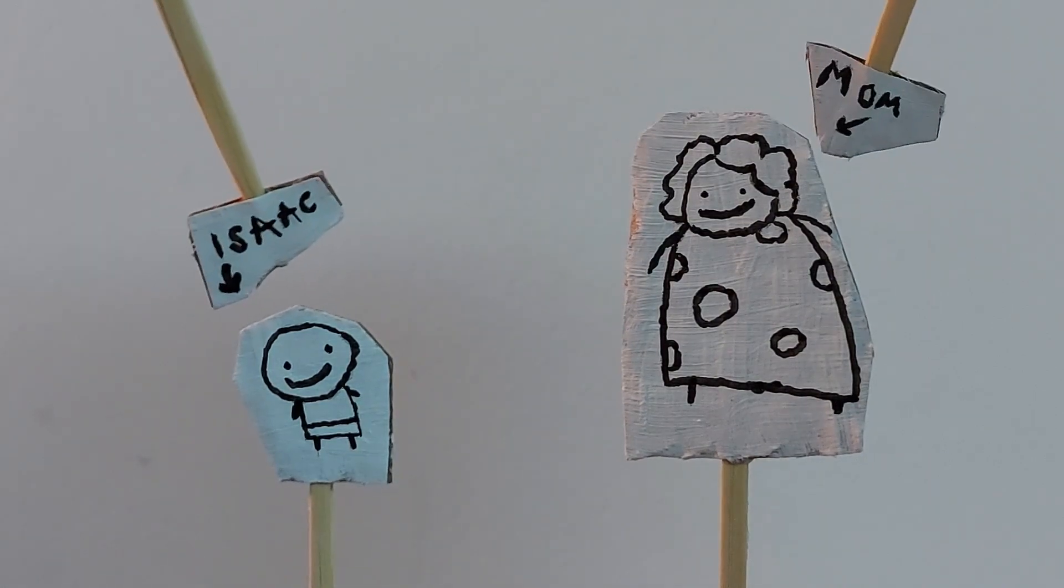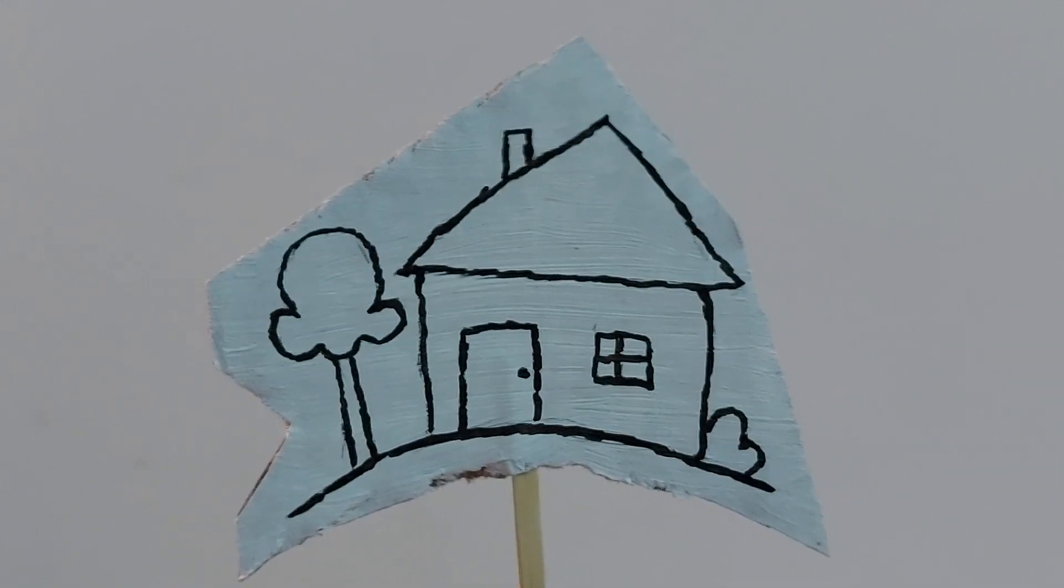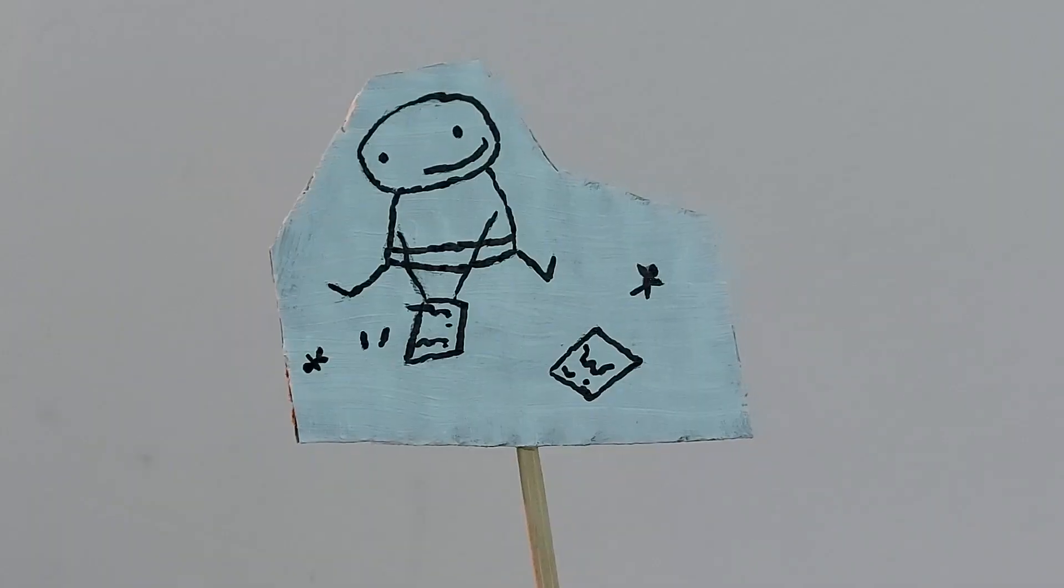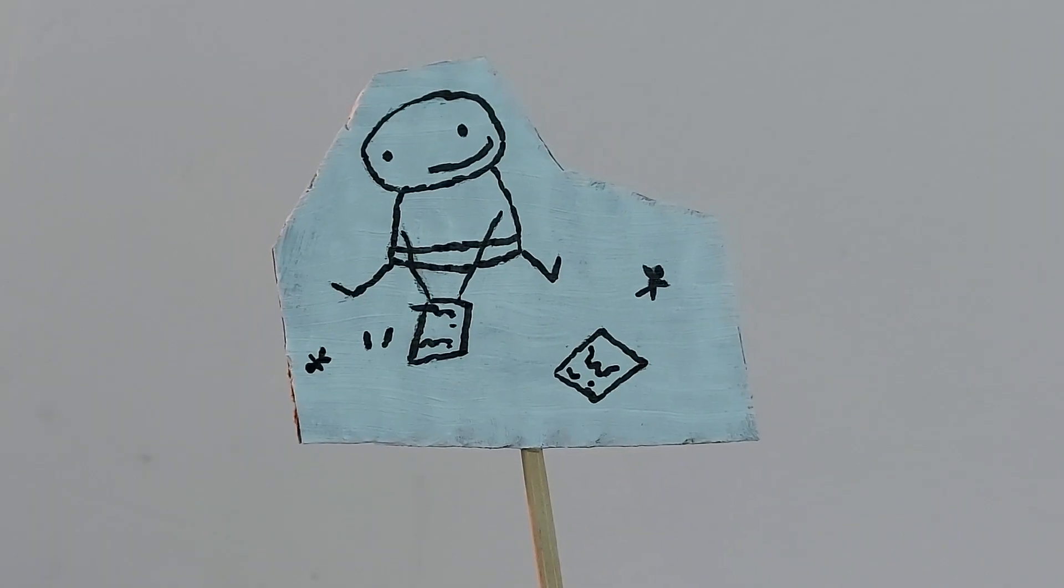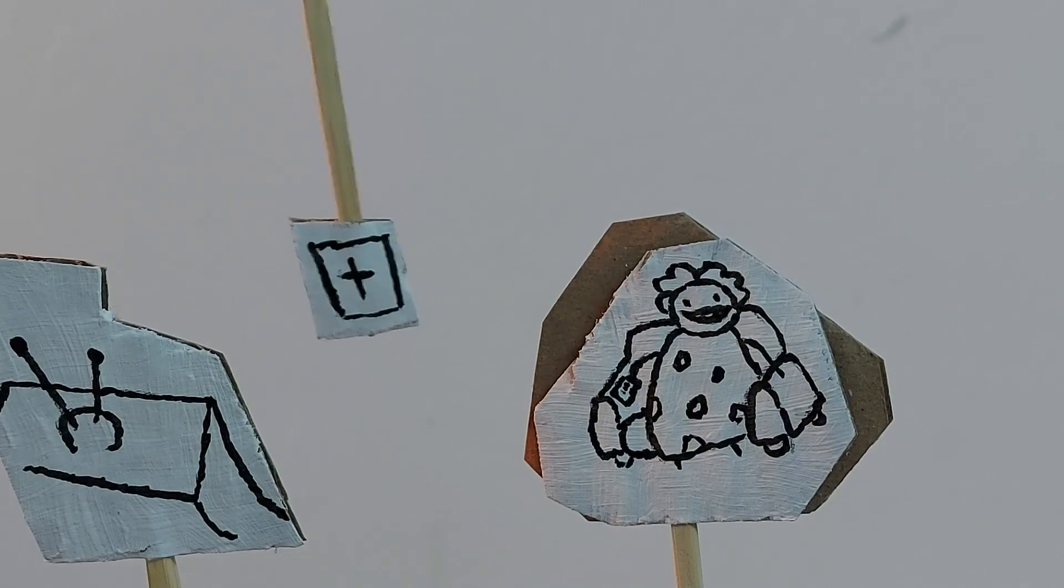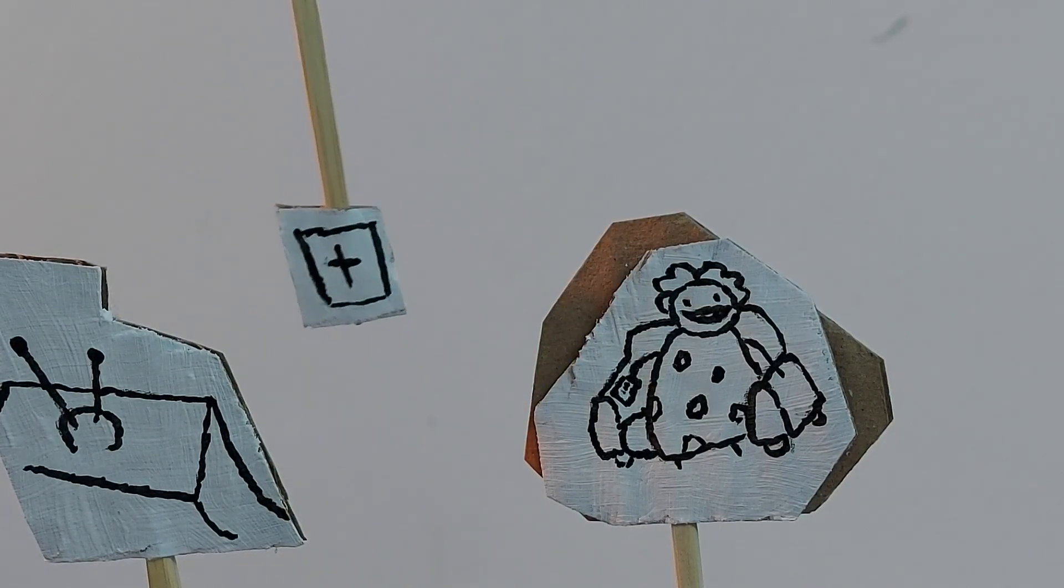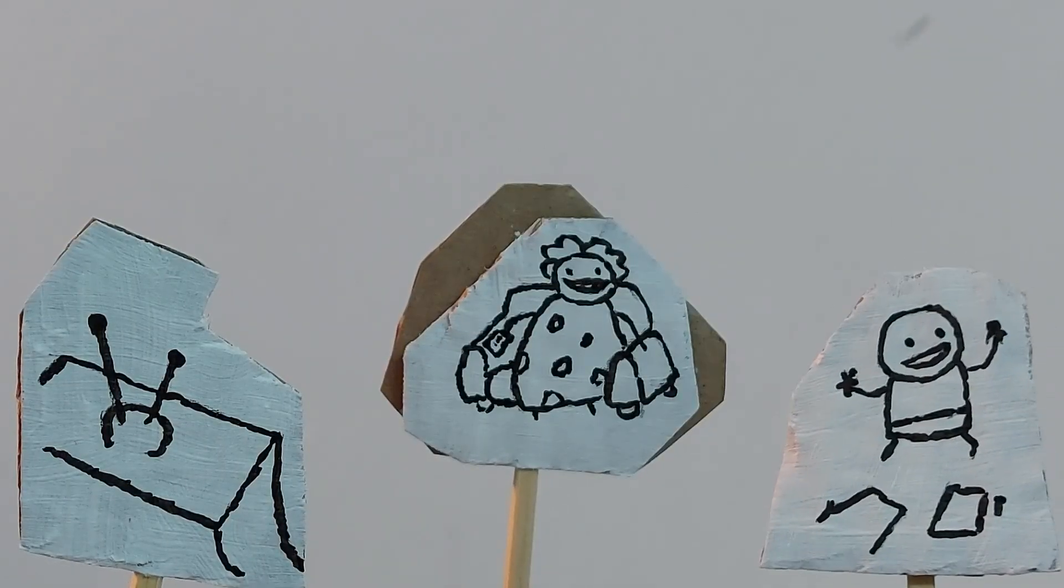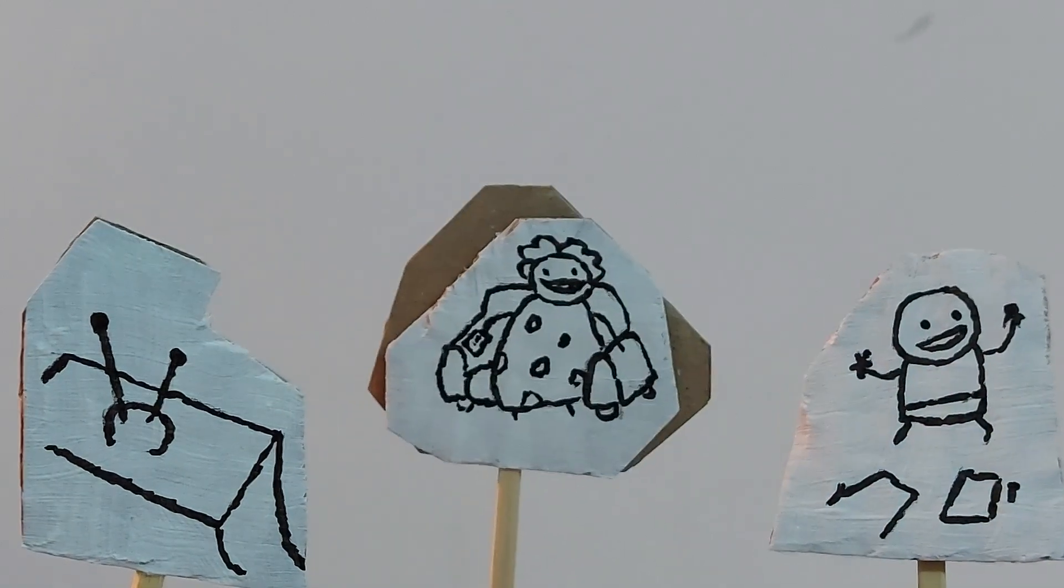Isaac and his mother lived alone in a small house on a hill. Isaac kept to himself, drawing pictures and playing with his toys as his mom watched Christian broadcasts on the television. Life was simple and they were both happy.